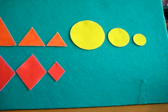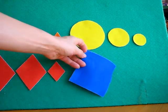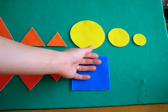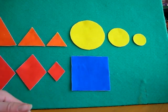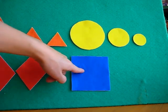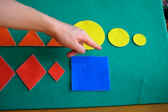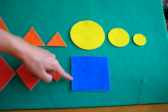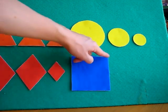Next, we have a square. That's a nice big blue square. Can you find something else blue? Look, your pants are blue. It matches. Let's count the sides on the square. One, two, three, four sides. Wow.